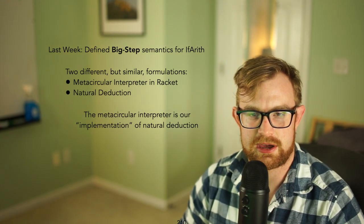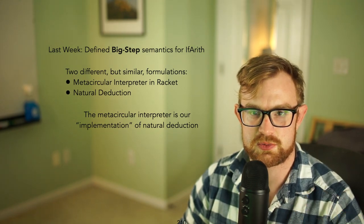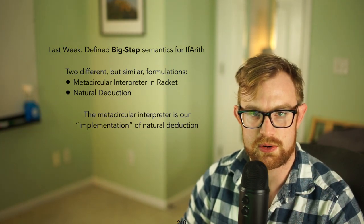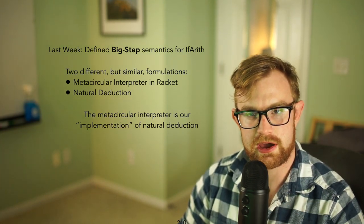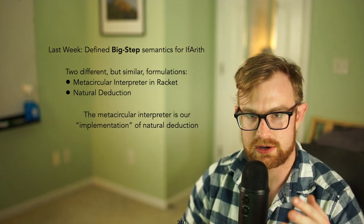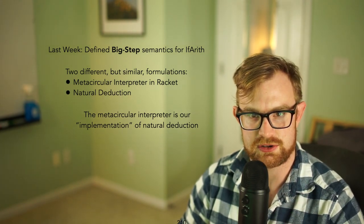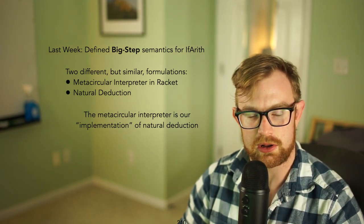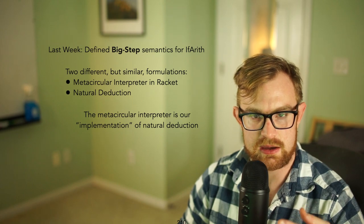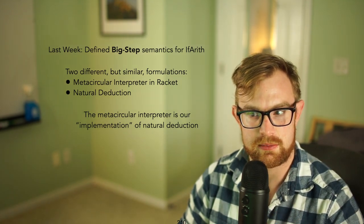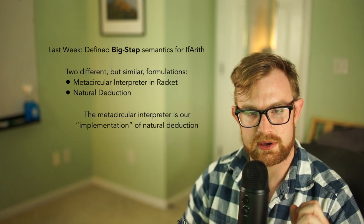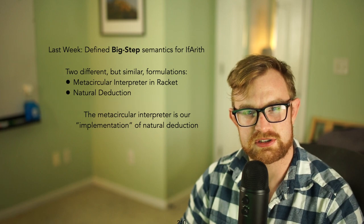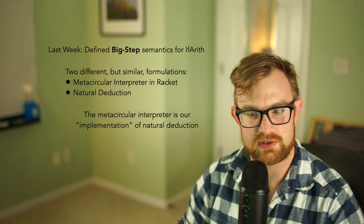Last week we discussed two different semantics for the if-arith language. First we discussed the metacircular interpretation, which is the intuitive interpretation you get from just coding it up in Racket. You're relying on a lot of Racket features like the Racket stack to allow nested function calls, Racket's definition of integers and all the operations that go along with that, and Racket's implementation of things like the control construct if. All of those things we're borrowing from Racket, and there's a natural correspondence with our natural deduction semantics.